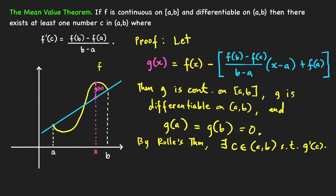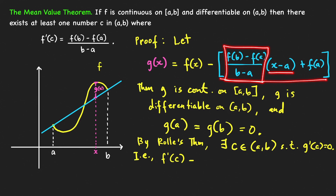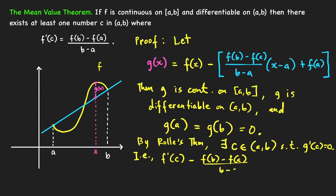By Rolle's Theorem, g'(c) = 0 for some c in (a, b). Computing g'(c): f'(c) minus (f(b) - f(a)) / (b - a) equals zero, since the derivative of (x - a) is 1 and the derivative of f(a) is zero. This gives us f'(c) = (f(b) - f(a)) / (b - a), which is exactly the conclusion of the Mean Value Theorem. The proof is complete.